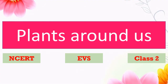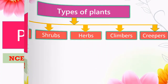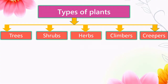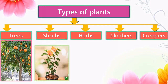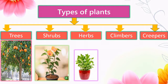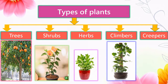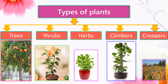Hello kids, welcome to our Blueberry Kids channel. In this video we are going to learn about plants around us. There are different types of plants such as trees, shrubs, herbs, climbers, and creepers. Let us learn all these types of plants in detail.